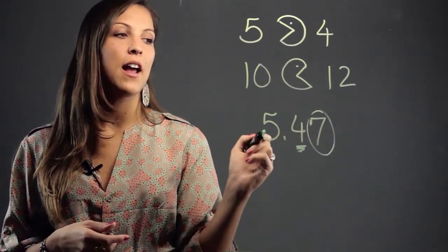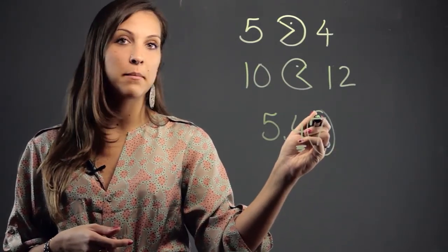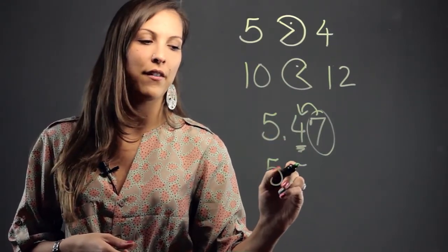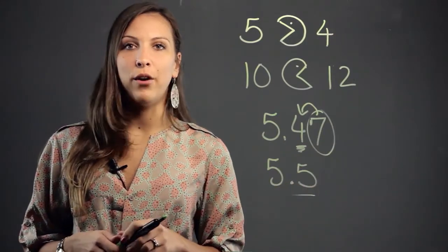So they're looking at this 7 and they're saying to themselves, 5 or more, raise the score. So because this number is above 5, that means that we're going to raise the score on this 4. We're going to make it a 5. It's going to jump up 1. So 5.47 will round to 5.5.